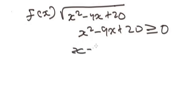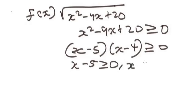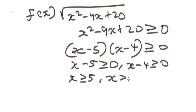Factoring gives us (x minus 5)(x minus 4) ≥ 0. Setting each factor equal to zero: x minus 5 equals 0 gives x equals 5, and x minus 4 equals 0 gives x equals 4. So x is greater than or equal to 5 and x is greater than or equal to 4.